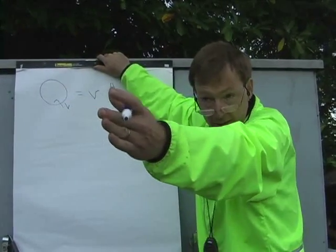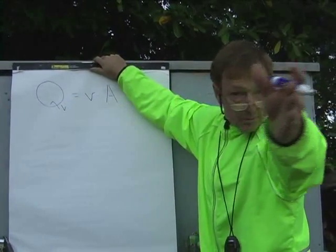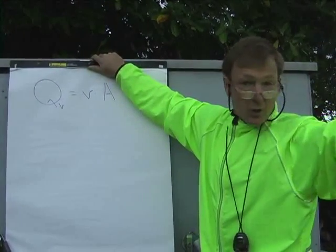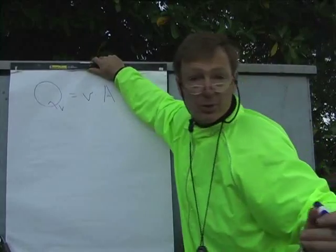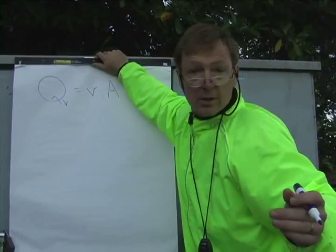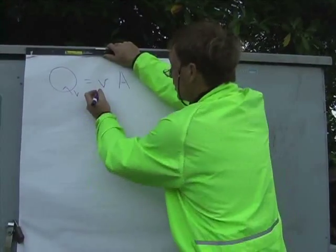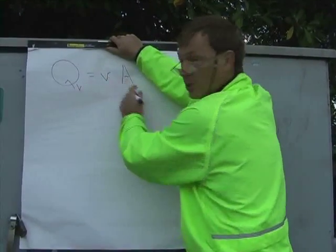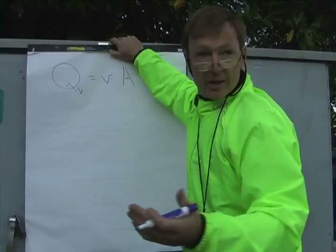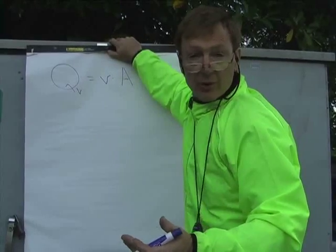So now you've got this area — this sheet — moving. And if you know how fast it's moving, then you can get velocity. Multiply it by the area, you get volume flow rate.